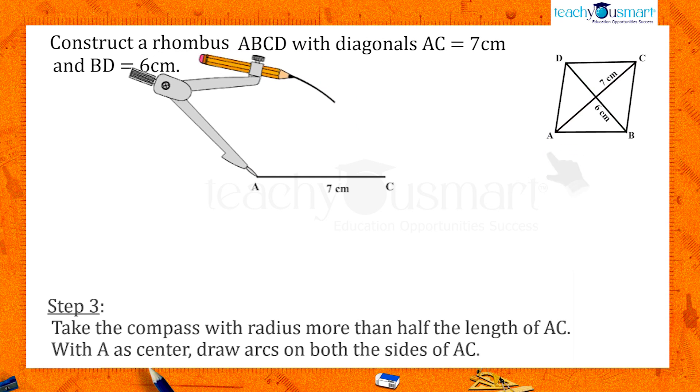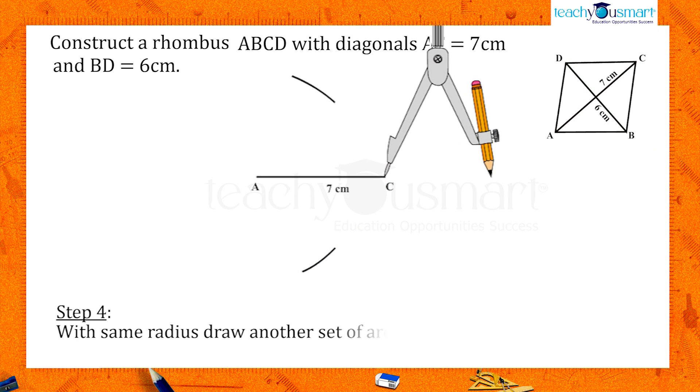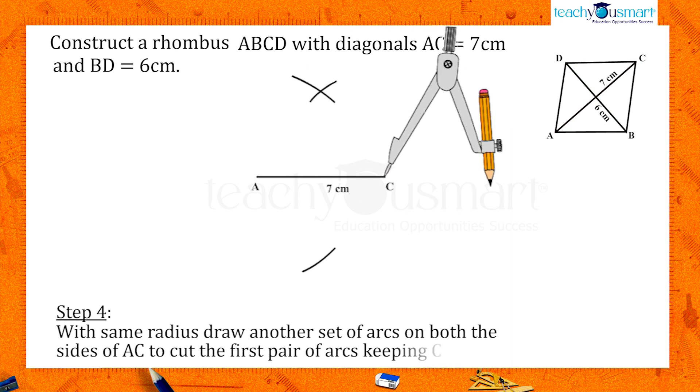With A as center, draw arcs on both sides of AC. With same radius, draw another set of arcs on both sides of AC to cut the first pair of arcs, keeping C as the center.